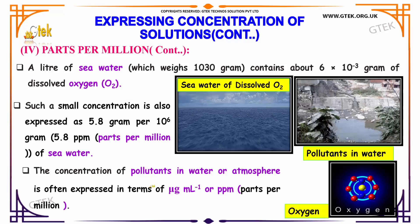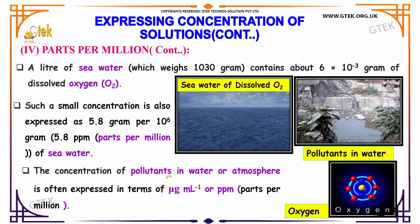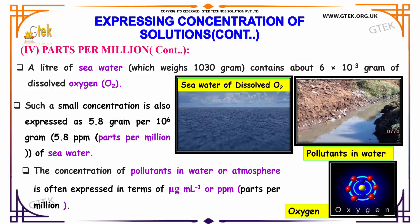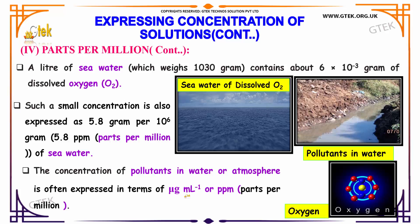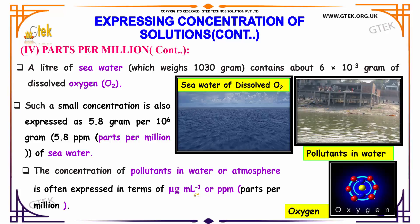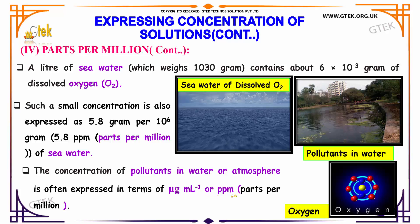The concentration of pollutants in water and atmosphere is often expressed in terms of micrograms per liter, or ppm, parts per million.